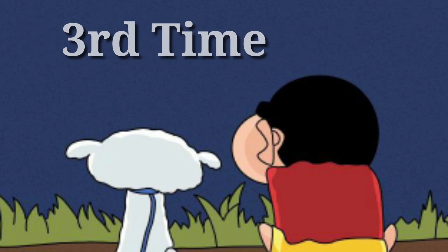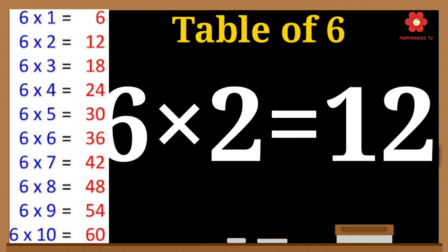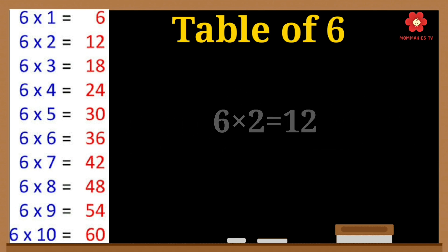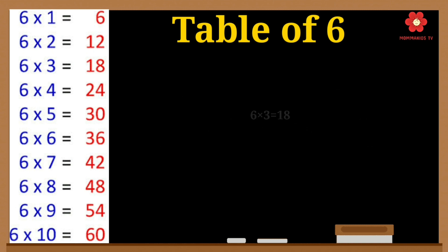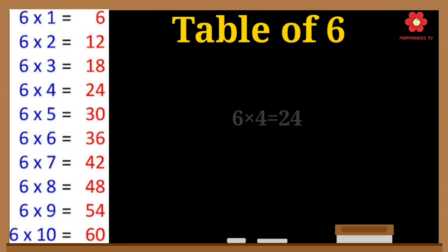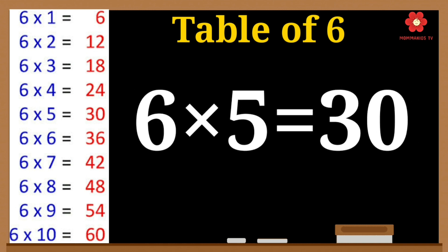6 ones are 6. 6 twos are 12. 6 threes are 18. 6 fours are 24. 6 fives are 30.